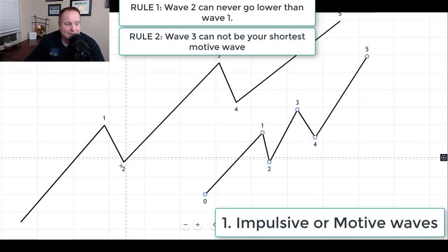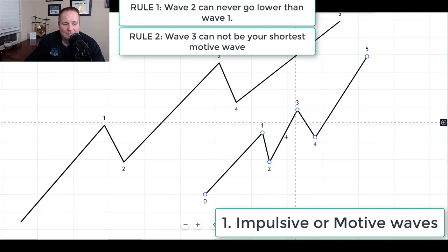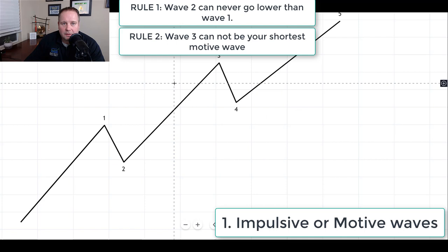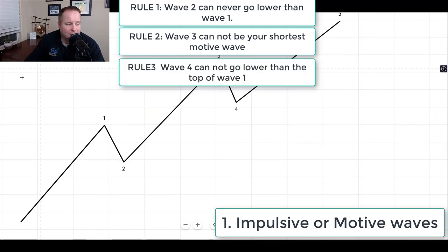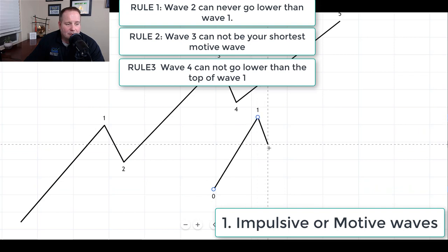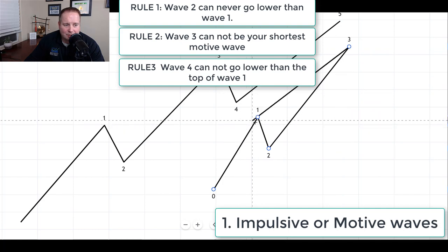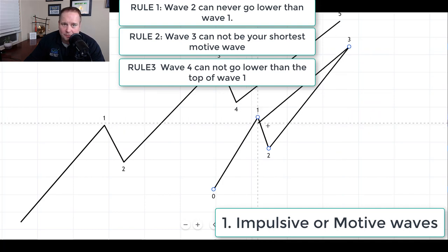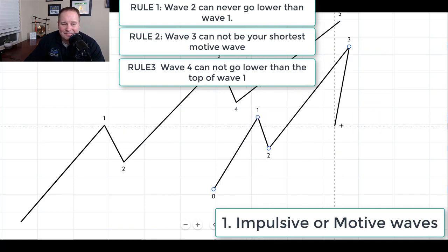Rule number one is that wave two can't go below wave one, and rule number two is that wave three cannot be your shortest motive wave. The third cardinal rule of Elliott wave motive waves, or impulsive waves, is that wave four can never enter wave one territory. So what does that mean? Well, that means if you've got wave one up, and then you've got two down, and then you've got three up, this wave four can never come down into wave one territory here. If it does, this is not a valid Elliott wave.